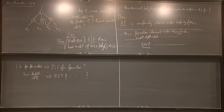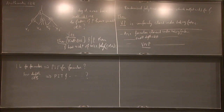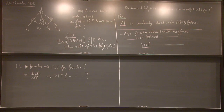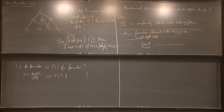Typically what happens is we get PITs for a class and we almost always know lower bounds against that class. Somehow the lower bound questions for restricted classes seem to be easier than the PIT question. Such a relation would possibly let us design deterministic PIT algorithms for things we don't know yet.